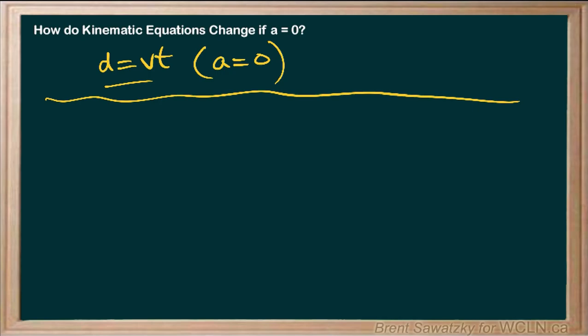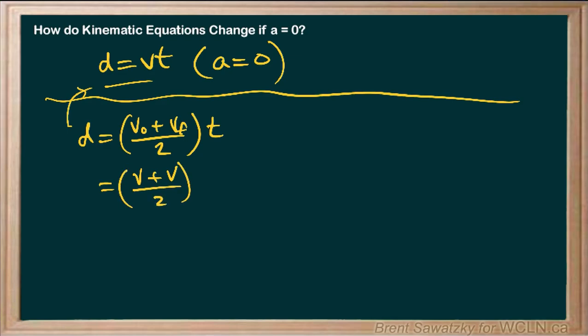If we had d equals v-naught plus v-final over 2, times t — we have the initial velocity and the final velocity divided by 2. Assuming a constant change, we can get the average velocity by adding the two and dividing by 2. What makes it different from d equals vt? It's the fact that v-naught and v-final are assumed to be different. But what if they were the same? Then v plus v over 2 times t gives us 2v over 2 times t — the twos cancel, and we're left with d equals vt.